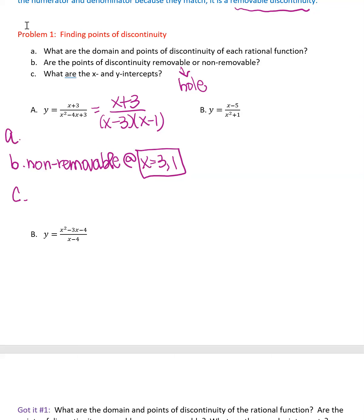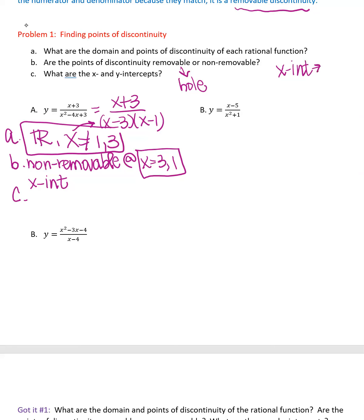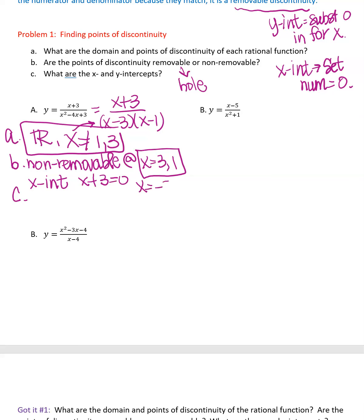For part A, the domain is all real numbers except those places where the denominator equals 0 — those same non-removable discontinuity values. So the domain is all real numbers except x ≠ 1 or x ≠ 3. Your domain elements are determined by those discontinuity points. For the x-intercept, set the numerator equal to 0: x + 3 = 0, so x = −3.